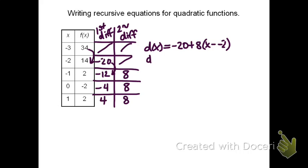Cleaning this up, I see that we get negative 20 plus 8 quantity x plus 2. Again, the x plus 2 is because we had minus a negative 2.